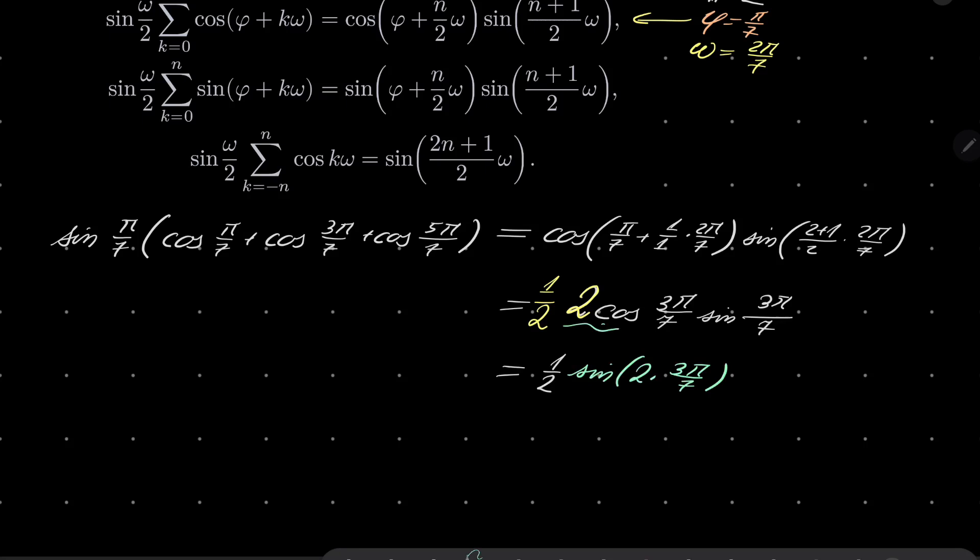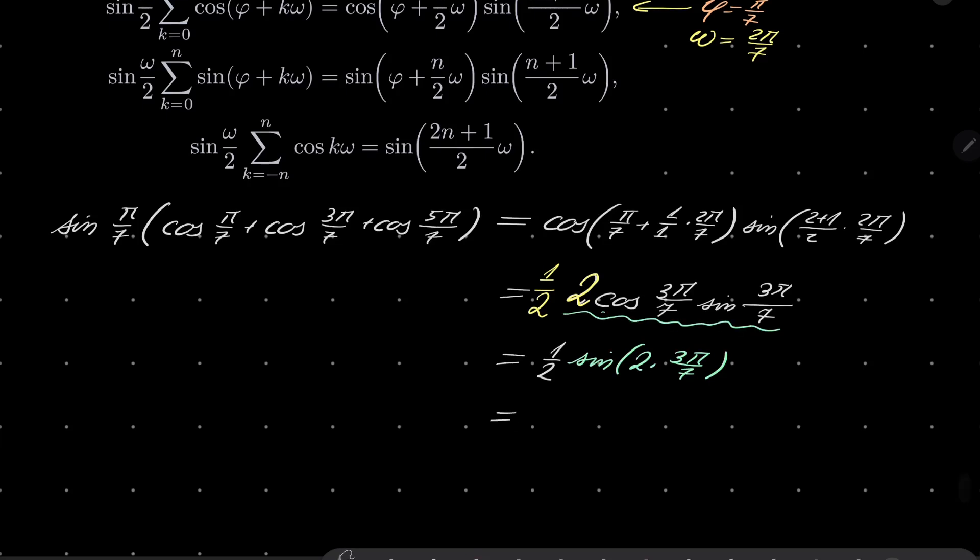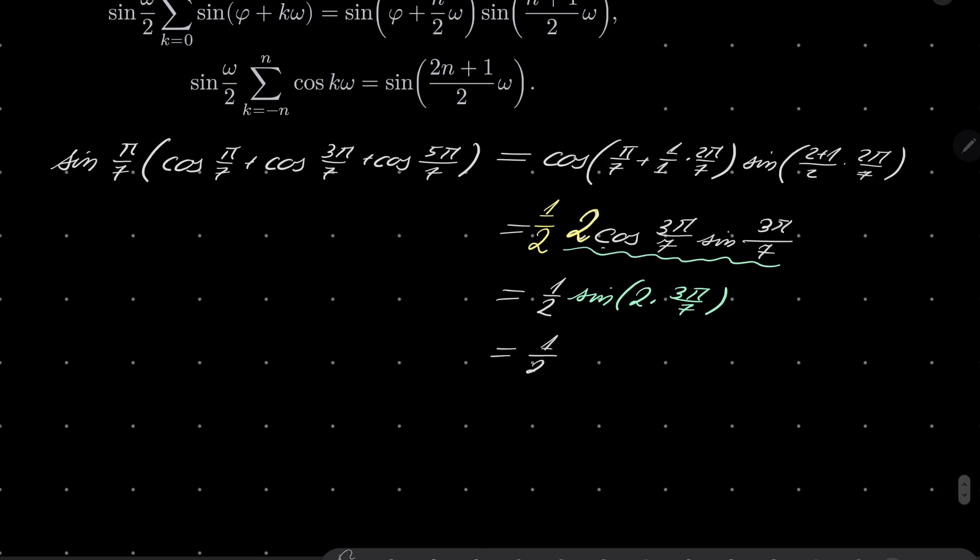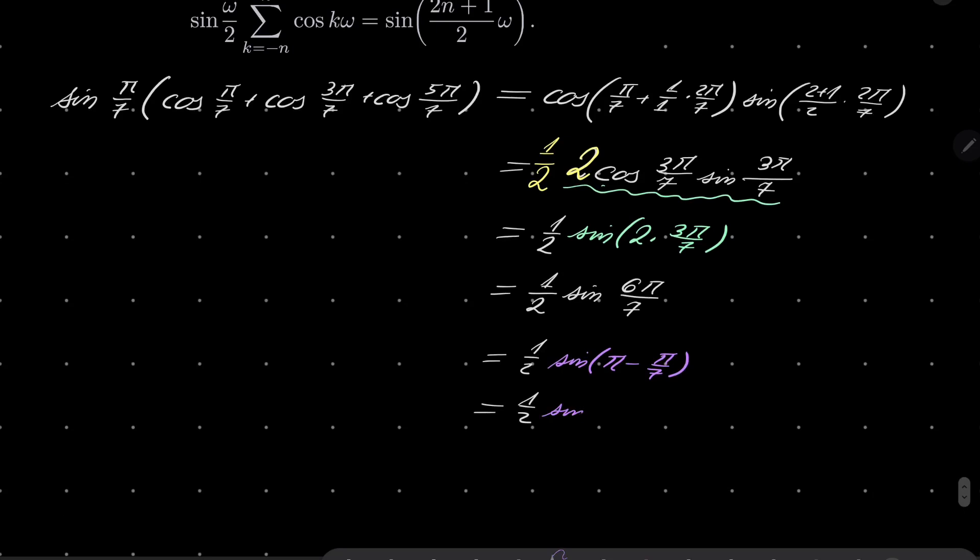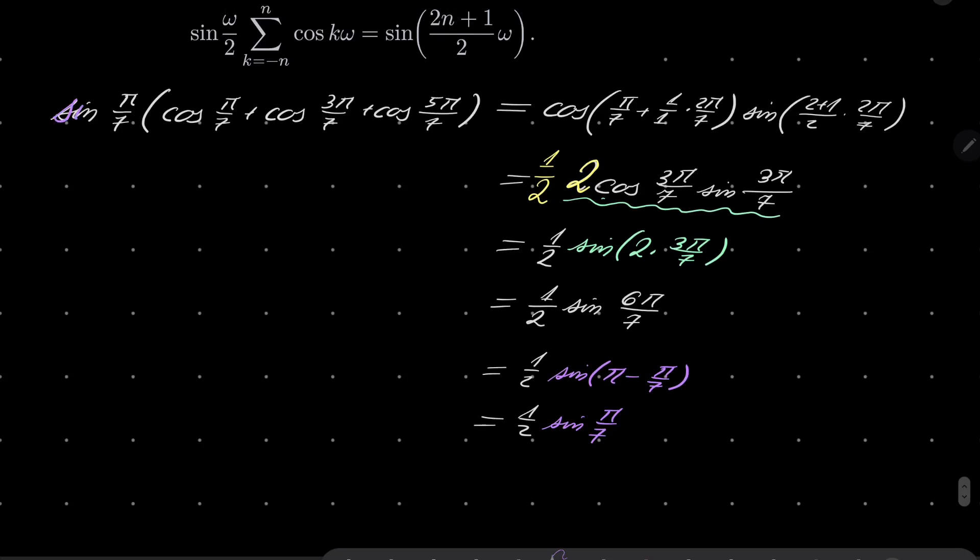Yes, this entire part can be replaced, which is one half times sine of 6 pi over 7. But notice that 6 pi over 7, I can write it as pi minus pi over 7, and sine of pi minus pi over 7 is just sine of pi over 7. And would you look at that? Here we also have sine of pi over 7. Of course sine of pi over 7 is not 0, so we can divide by sine of pi over 7.